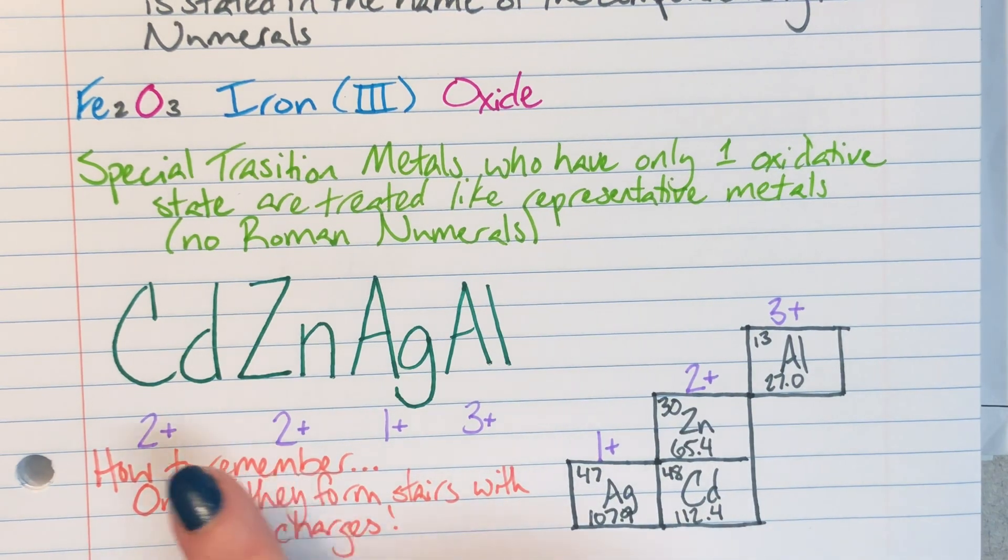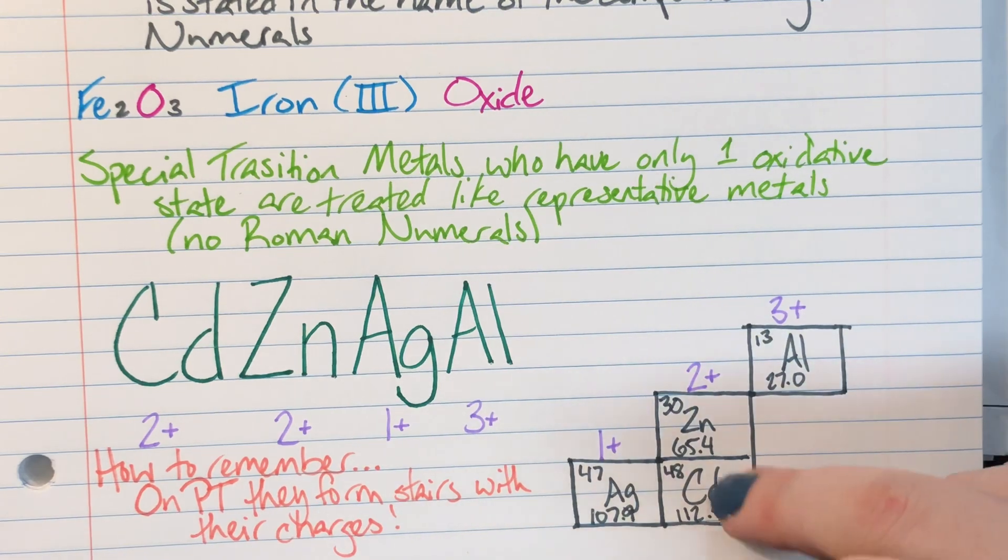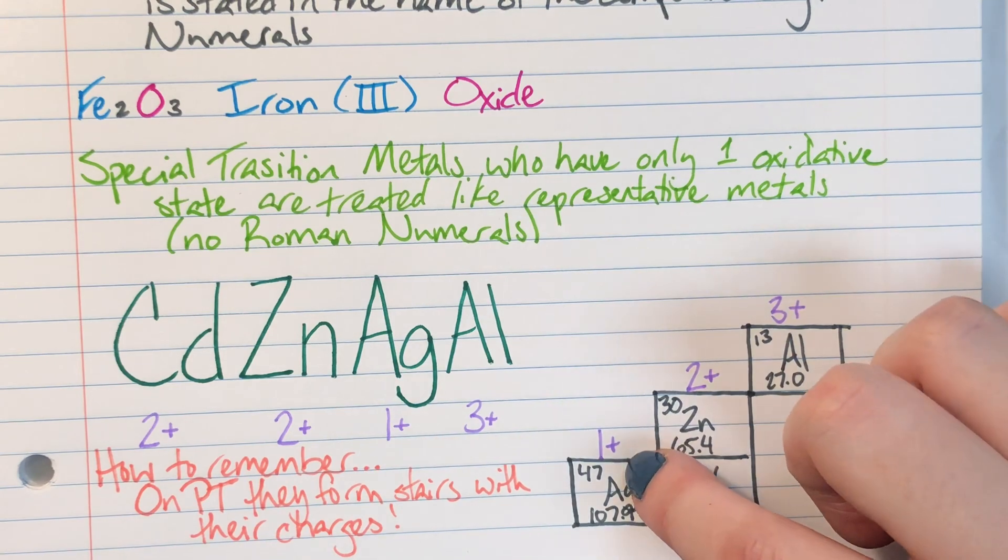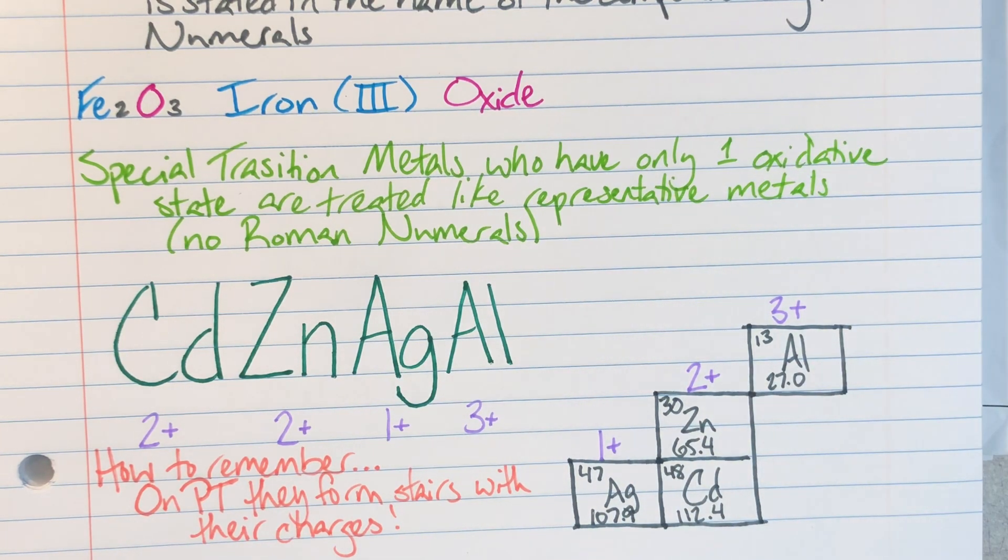How you can actually remember what CADZNAGL's charge is going to be. You can actually find them on the periodic table. And they will form kind of a stair step. My first stair is going to have a charge of plus one. Second stair a charge of plus two. And third stair a charge of plus three.